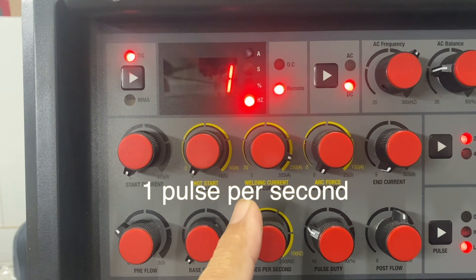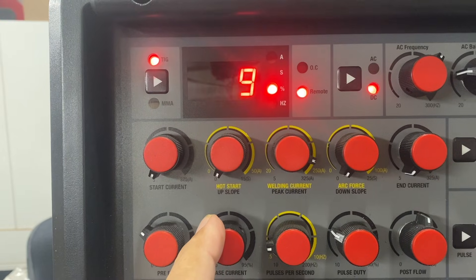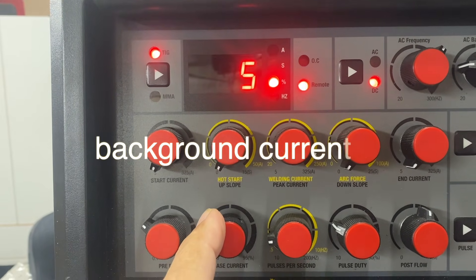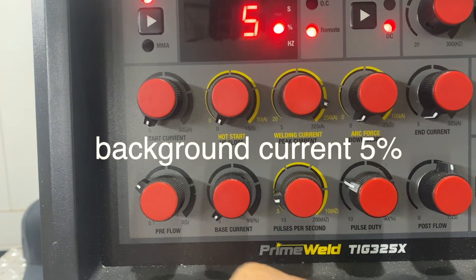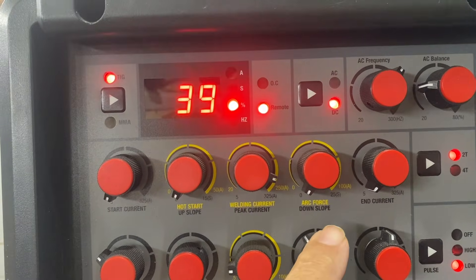Then the trick is to set the background current very low at only five percent. That's pretty low for a background current. Oftentimes background current is set at 30 to 50 percent, but setting it at five really drops that amperage down a lot and really controls distortion.